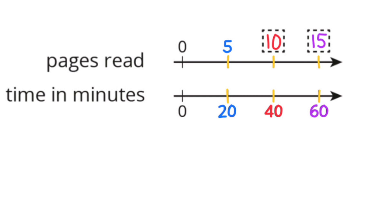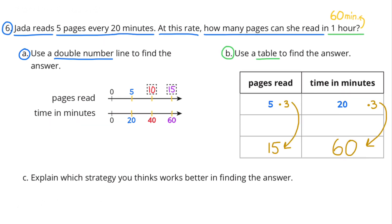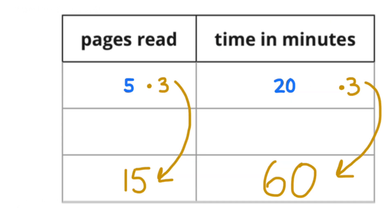5 pages were read in 20 minutes, 10 pages in 40 minutes, and 15 pages in 60 minutes. To find how many pages she read in 1 hour (60 minutes), we multiply 20 minutes by 3 to get 60 minutes, then multiply the pages by 3: 5 times 3 equals 15. Jada read 15 pages in 60 minutes.